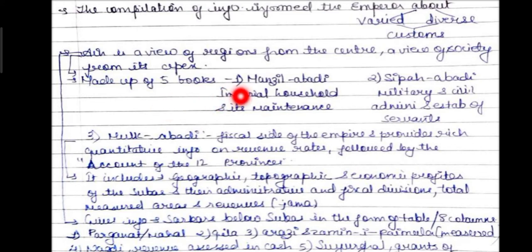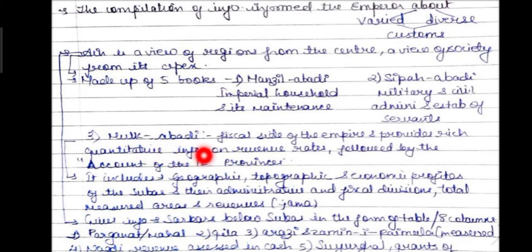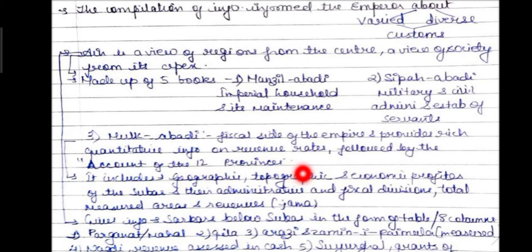The Ain-i-Akbari is made up of five books. The first is Manzil Abadi — the imperial household and its maintenance. The second is Sipaah Abadi — the military and civil administration. The third covers the establishment of servants and the fiscal side of the empire, providing rich quantitative information on revenue rates, followed by an account of 12 provinces including topographical and economic details of the subas, administration, and fiscal revisions. It also covers total major areas and revenues.